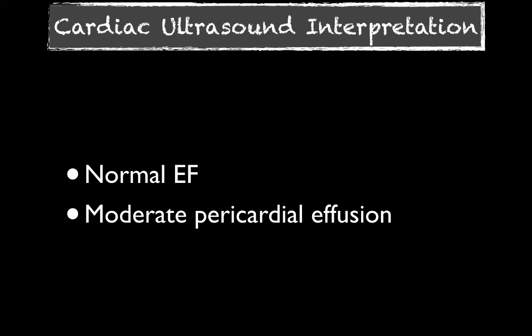So for our interpretation: the ejection fraction appears preserved and normal on our bedside cardiac ultrasound. We're classifying this as a moderate pericardial effusion because it is circumferential and, if measured, would be one centimeter or greater.